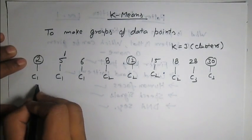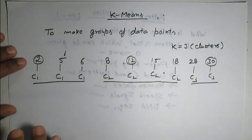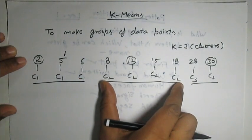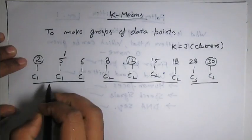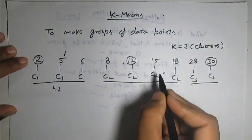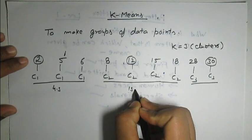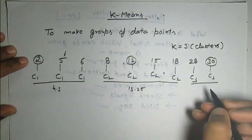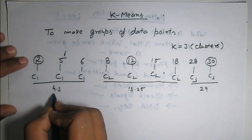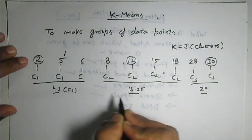The second step is to find the mean of the clusters. The members of C1, C2, and C3 are identified, and the mean of C1 is 4.3, the mean of C2 is 13.25, and the mean of C3 is 29. These means are then considered the new cluster centers for each cluster.